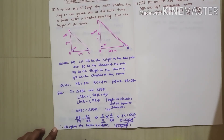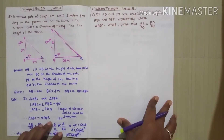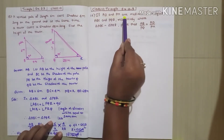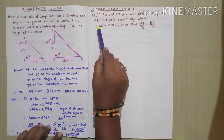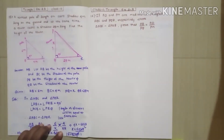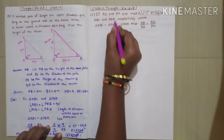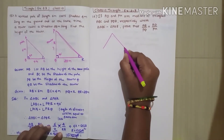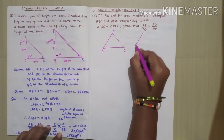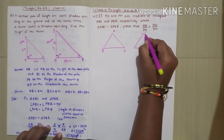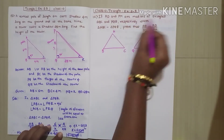Next we'll see the 16th sum. Problem 16: If AD and PM are medians of triangles ABC and PQR respectively, where triangle ABC is similar to triangle PQR, prove that AB/PQ = AD/PM. First we'll draw triangles ABC and PQR.